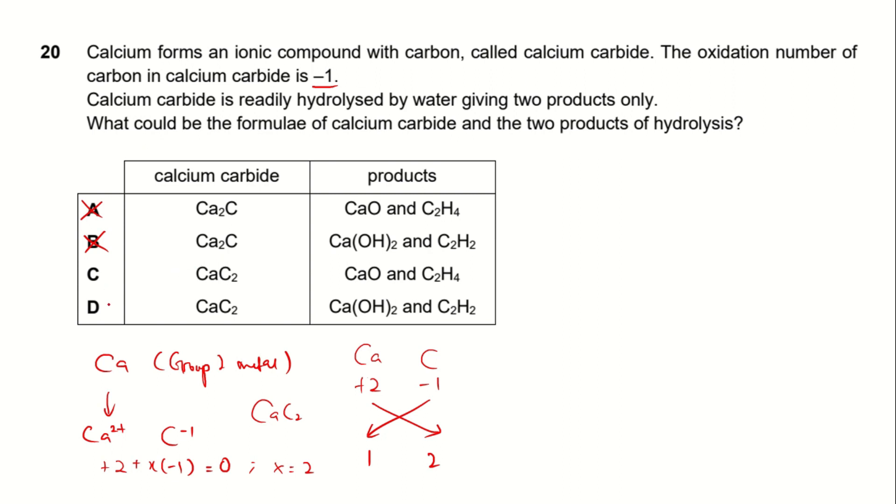So only C or D can be the answer. Now this line tells us that calcium carbide is hydrolyzed by water to give 2 products only. So calcium carbide, CaC2, will react with water to form 2 products.